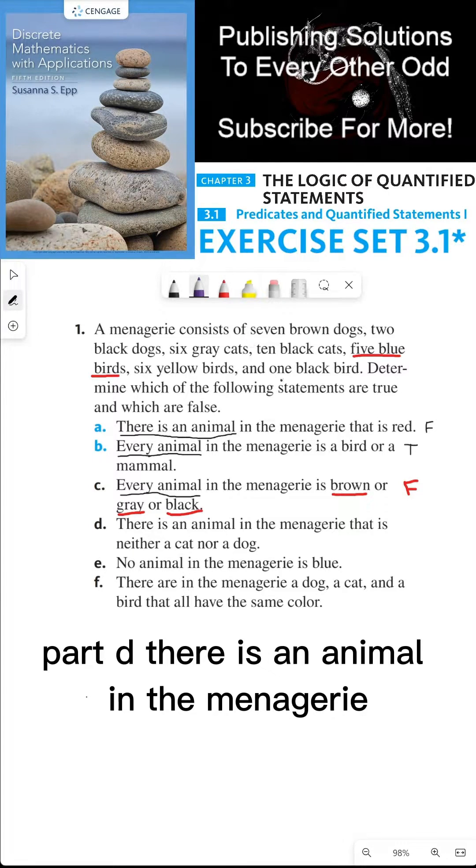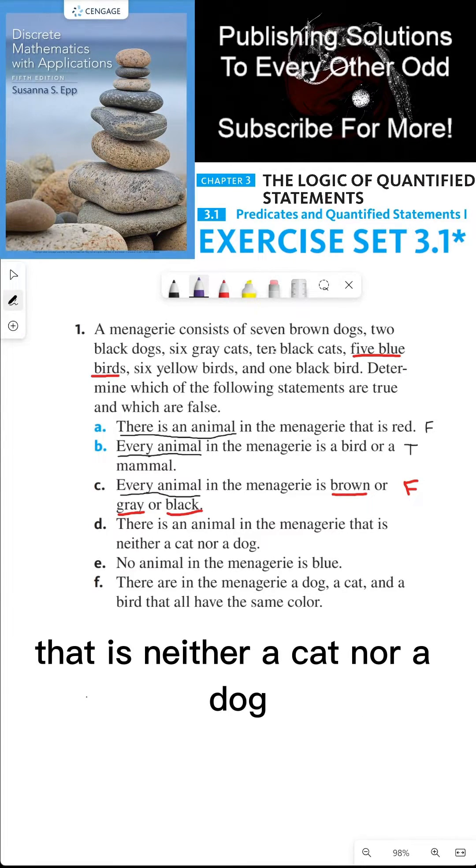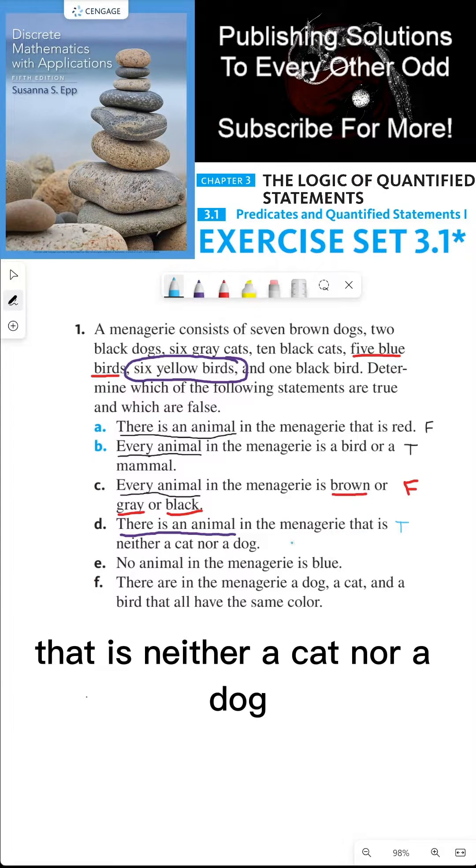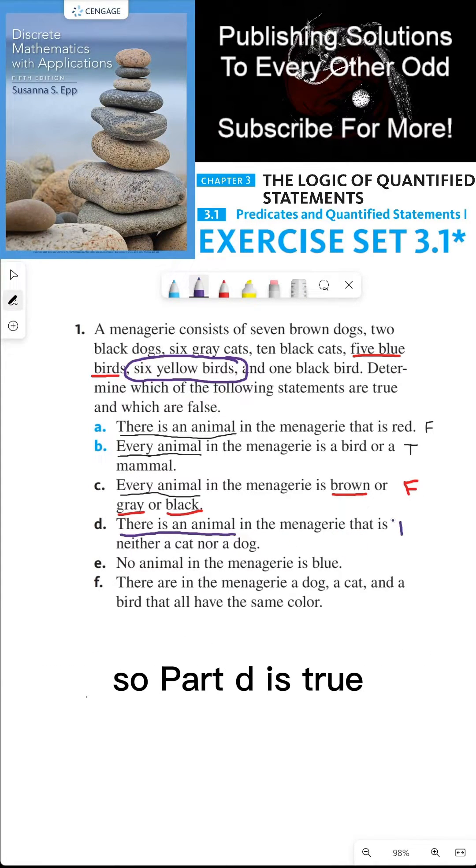Part D. There is an animal in the menagerie that is neither a cat nor a dog. Part D is true because there is an animal in the menagerie that is neither a cat nor a dog.